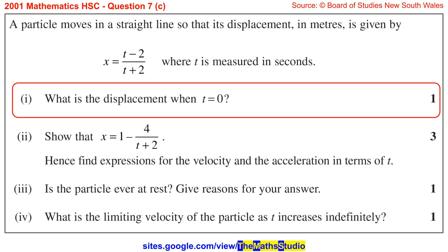Question 7c. A particle moves in a straight line so that its displacement in meters is given by x equals t minus 2 over t plus 2, where t is measured in seconds.